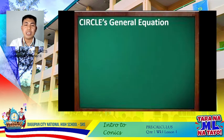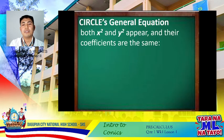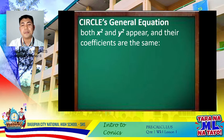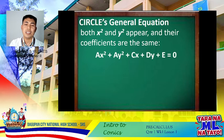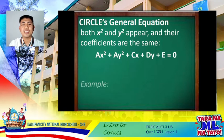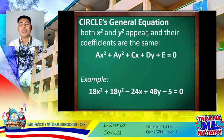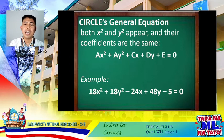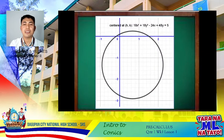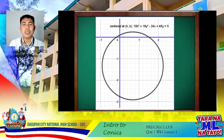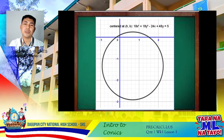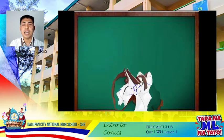Let's proceed with the general equation of a circle. For the general equation of a circle, both variables x and y appear on the second degree, and the numerical coefficients are the same. The formula is: ax² + ay² + cx + dy + e = 0. As an example: 18x² + 18y² − 24x + 48y − 5 = 0. We will discuss further how to graph circles in our succeeding lessons.